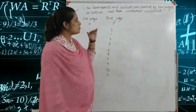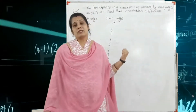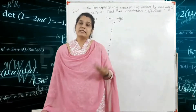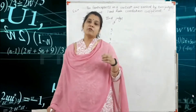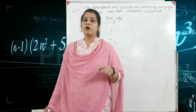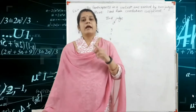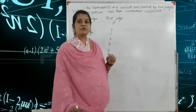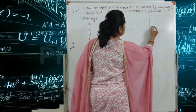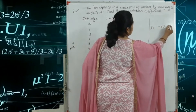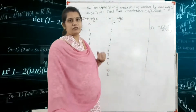Since the ranks are distinct and not repeated, we use the formula: rho = 1 minus 6 times summation d² divided by n(n² minus 1), where n(n² minus 1) is in the denominator. So first we write the formula: rho = 1 minus 6 times summation d² upon n(n² minus 1). This is the formula for the rank correlation coefficient.